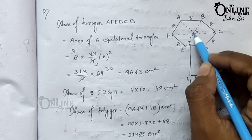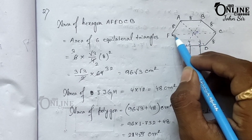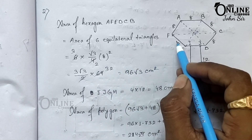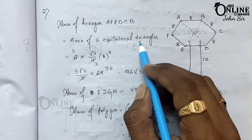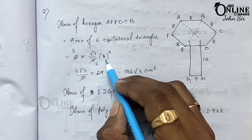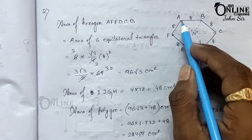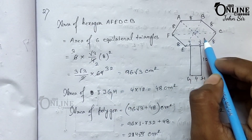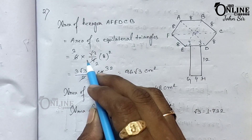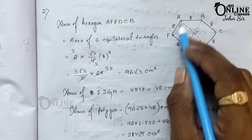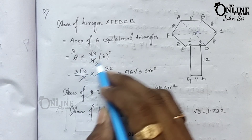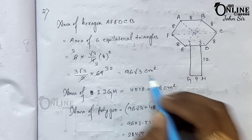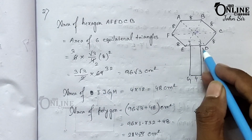The formula for the area of an equilateral triangle is (√3 / 4) times side squared. Since all sides are 8 centimeters: (√3 / 4) times 8 squared. There are 6 such triangles, so multiply by 6. The area of the hexagon equals 6 times (√3 / 4) times 8 squared, which equals 96√3 centimeters square.